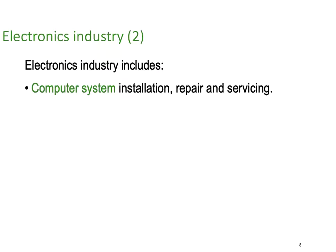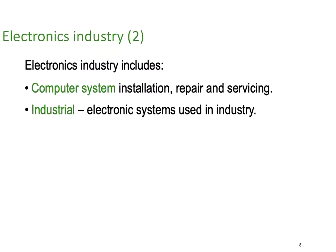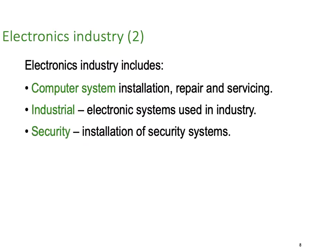The electronics industry also includes computer systems — installation, service, and repair, whether domestic or commercial. Industrial electronic systems, called PLCs or programmable logic controls, are widely used in industrial control systems. Security plays a large part in industrial electronics these days, including systems for monitoring entry and exit and video systems.